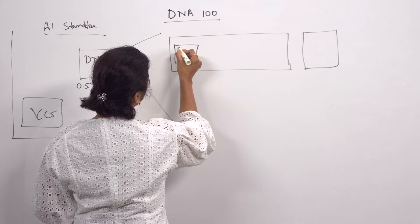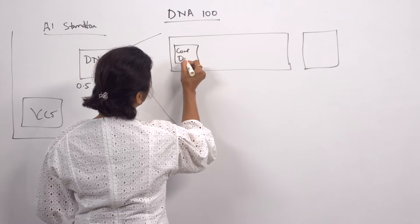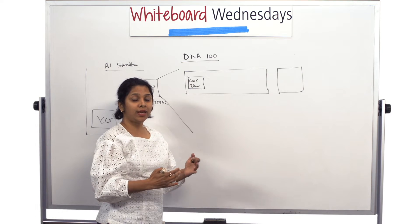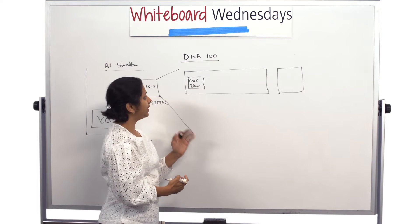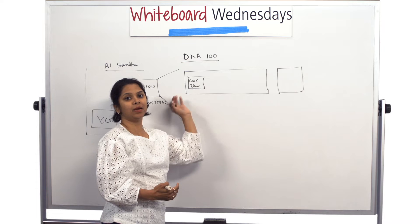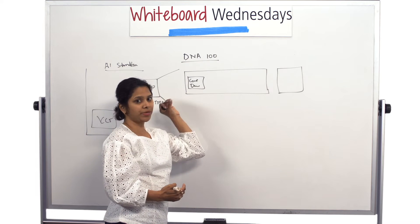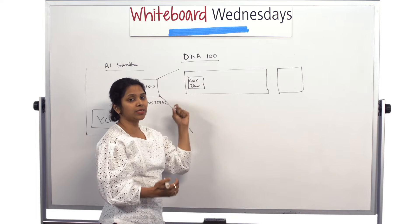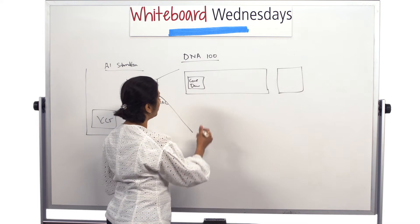So the first block where we come and we do the compression decompression. As the name states, this is where when the sparse weights and the sparse data come in, they are coming in the compressed form, they are getting decompressed and going into the next blocks. While they are going out of this, they are again getting compressed in the required form and going out.